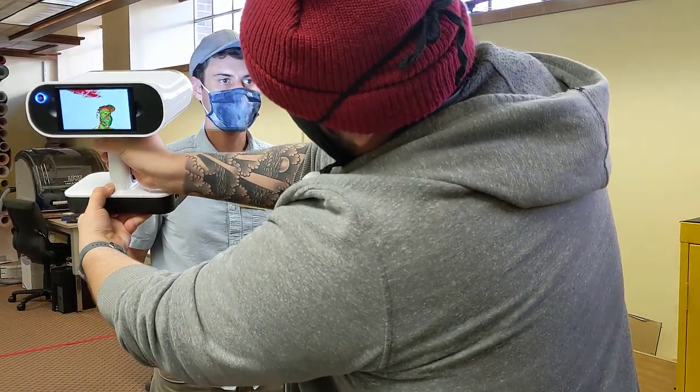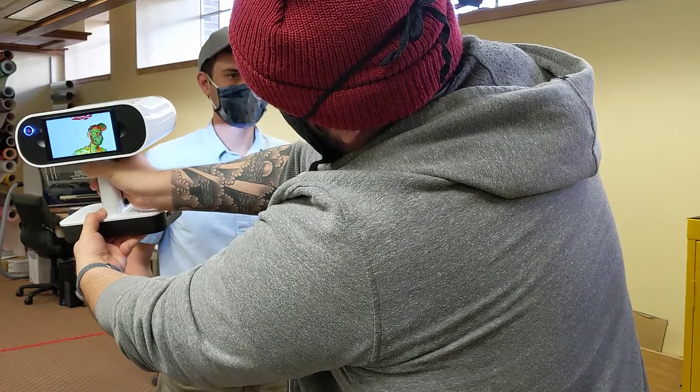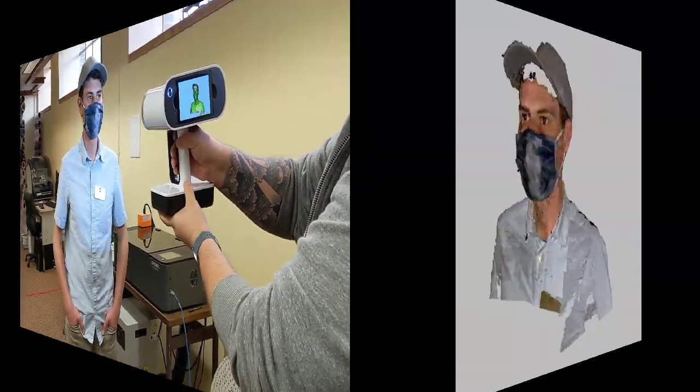A 3D scanner uses multiple sensors and light to capture lots of images or frames of the object. It then stitches these images together to create a digital representation of the object.